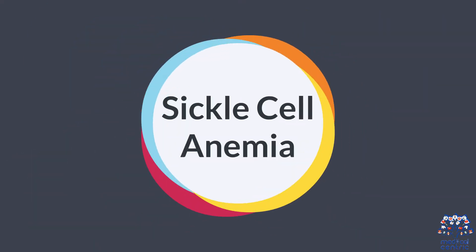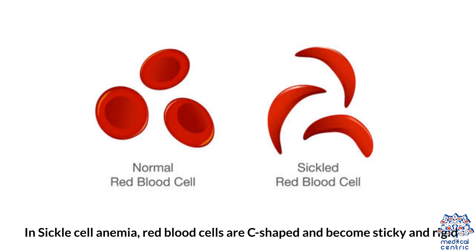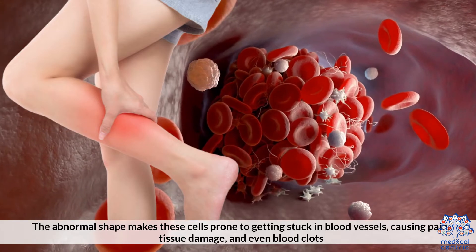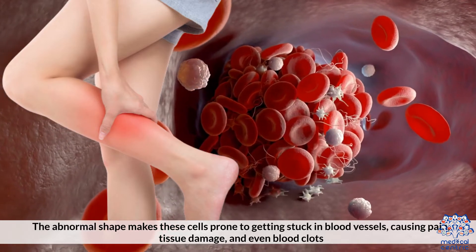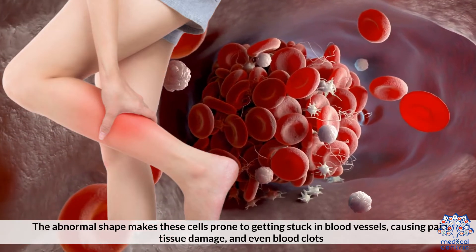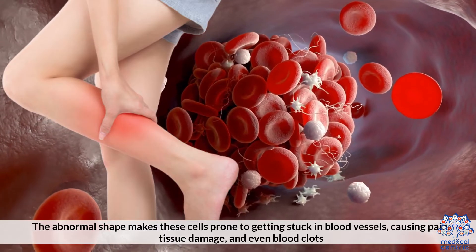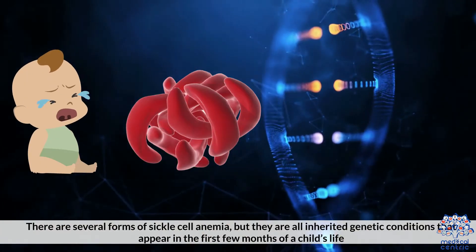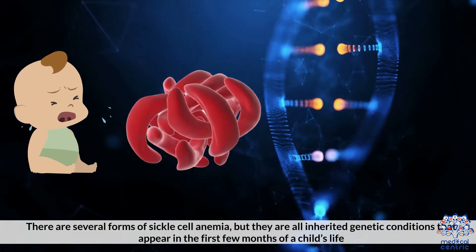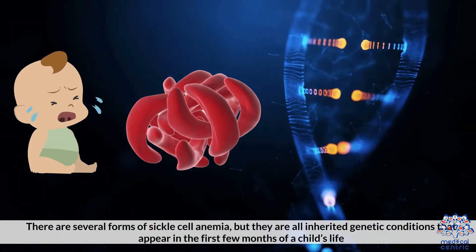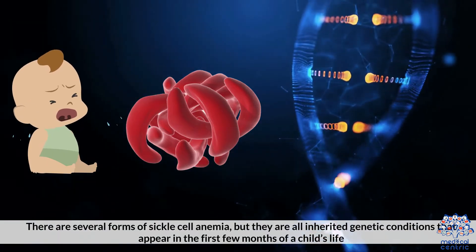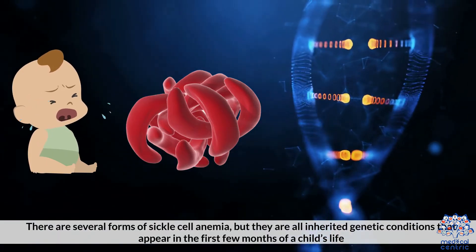Type 5: Sickle Cell Anemia. In sickle cell anemia, red blood cells are C-shaped and become sticky and rigid. The abnormal shape makes these cells prone to getting stuck in blood vessels, causing pain, tissue damage, and even blood clots. There are several forms of sickle cell anemia, but they are all inherited genetic conditions that appear in the first few months of a child's life.